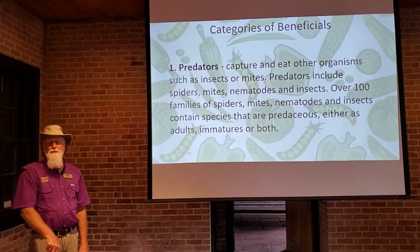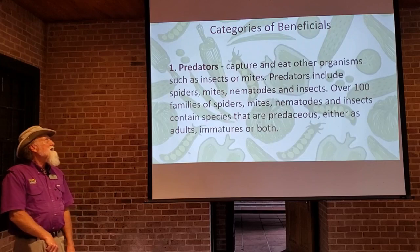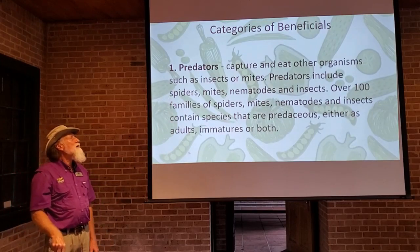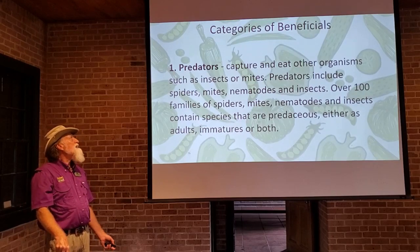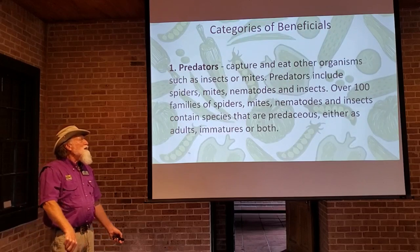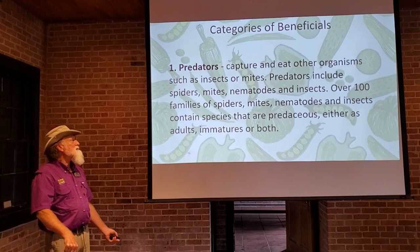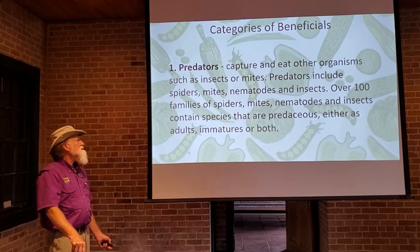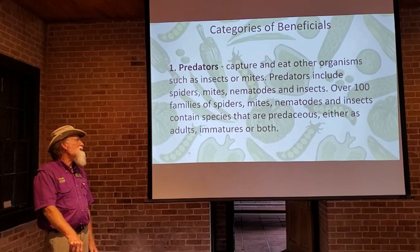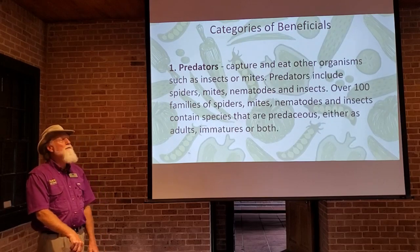The beneficials can be broken down into three broad categories. The first category are the predators — organisms that capture other organisms like mites and insects and devour them to help get rid of those in our garden. The predators include spiders, mites, nematodes, and other insects, and there are over a hundred families that contain predaceous species that are either predaceous as adults, as immatures, or both.